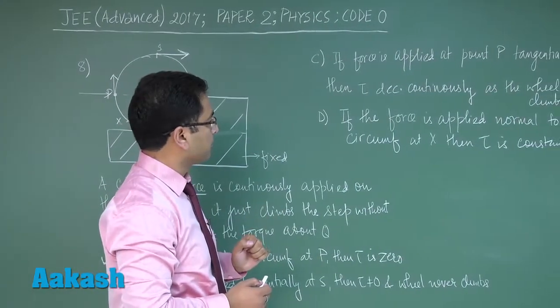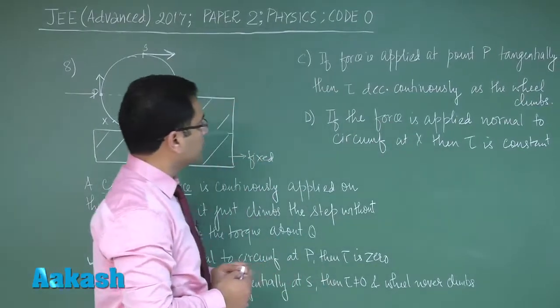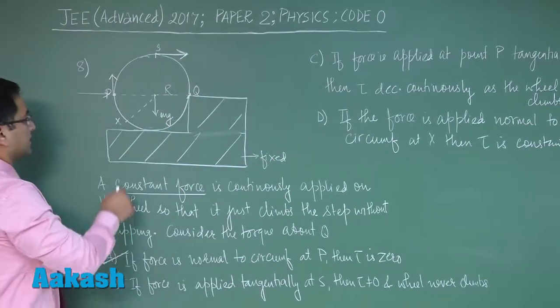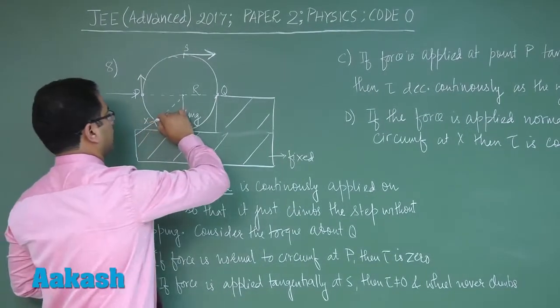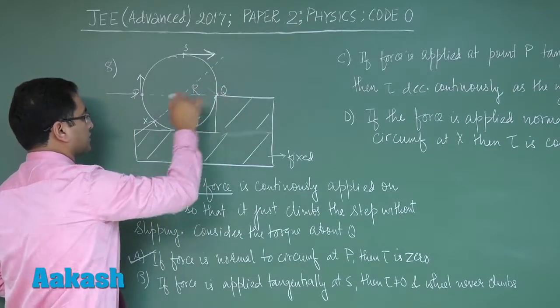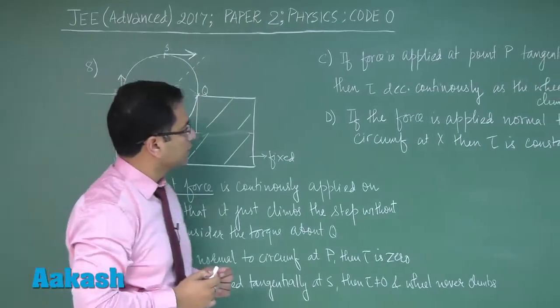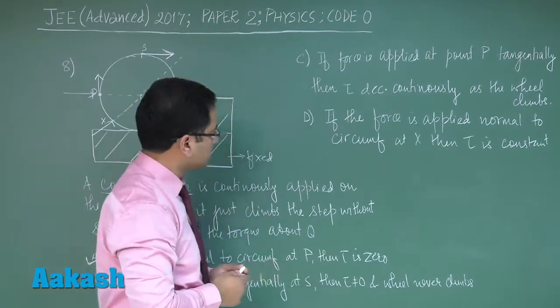Now for option number D, if the force is applied normal to circumference at X, that means the force is applied something in this way, and the line of action of the force would go here while the perpendicular distance would be there. So the torque is nonzero, and the magnitude of the torque would also be constant. So option number D would also be the correct one.